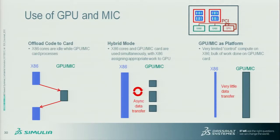A third possibility — of interest in the industry overall — is GPU or MIC as a platform. In this case, the x86 processor is basically the traffic cop or controller, and you move all heavy-duty compute onto the GPU. This is what we're evaluating: is GPU or MIC likely to emerge as a platform that actually stands on its own? For that to be a reality, we essentially have to port all of our code to run on the GPU. If that becomes realistic, GPU becomes a very interesting part of HPC, going well beyond being just an accelerator.